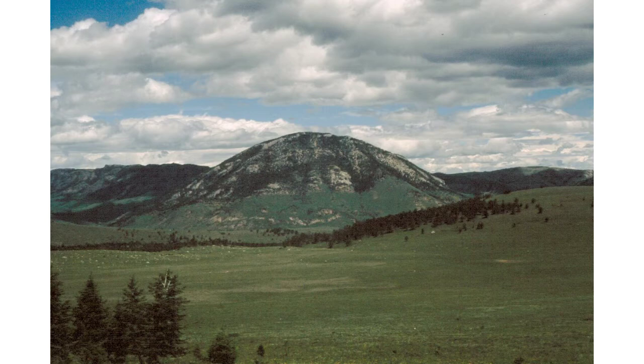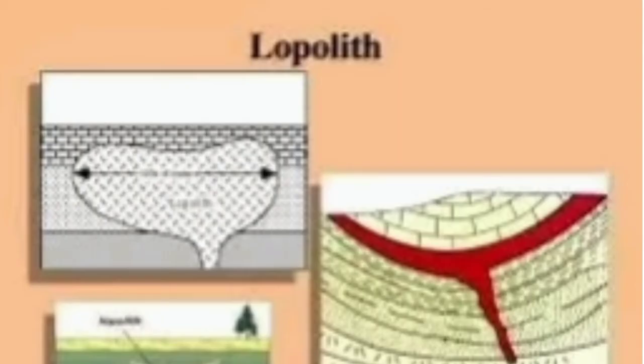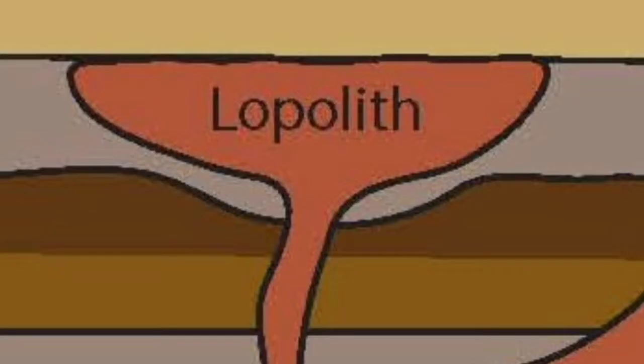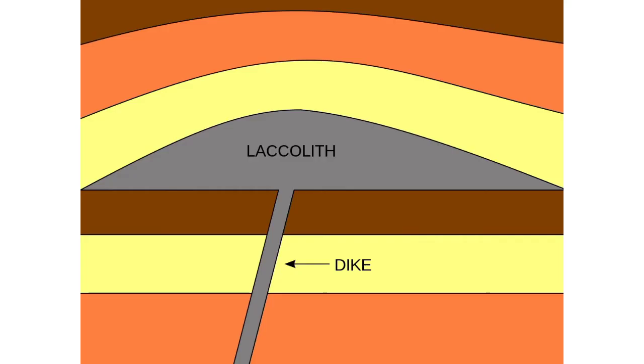All these features can be identified based on their shape only. When we identify a dike, it is vertical; when we identify a sill, it is horizontal; and when we identify a laccolith, it is a dome-shaped structure made of lava.